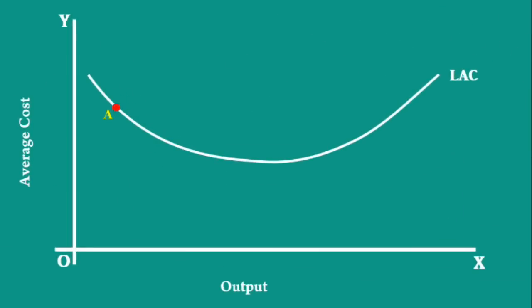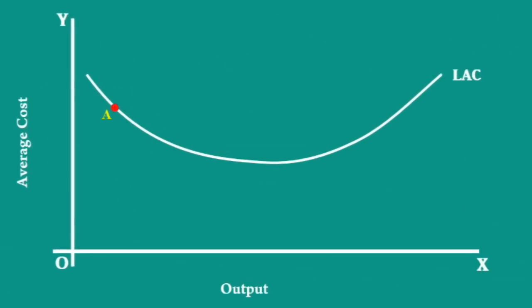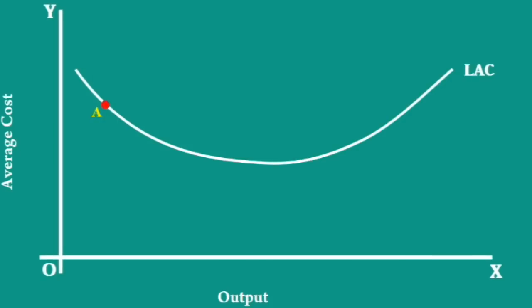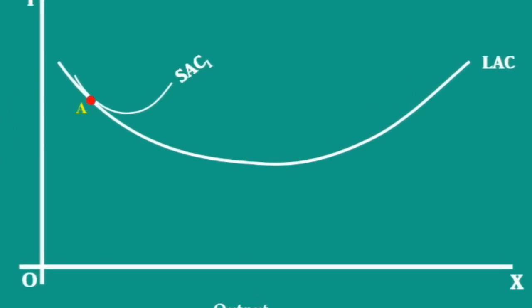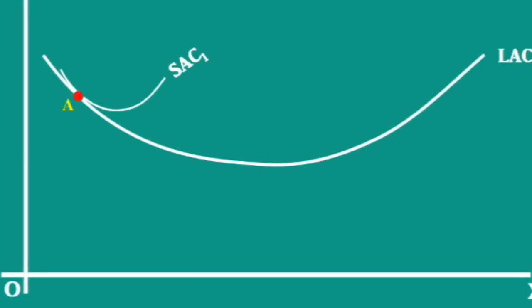Take point A on the curve. It shows a specific plant size. At this point, the plant's short run average cost curve,